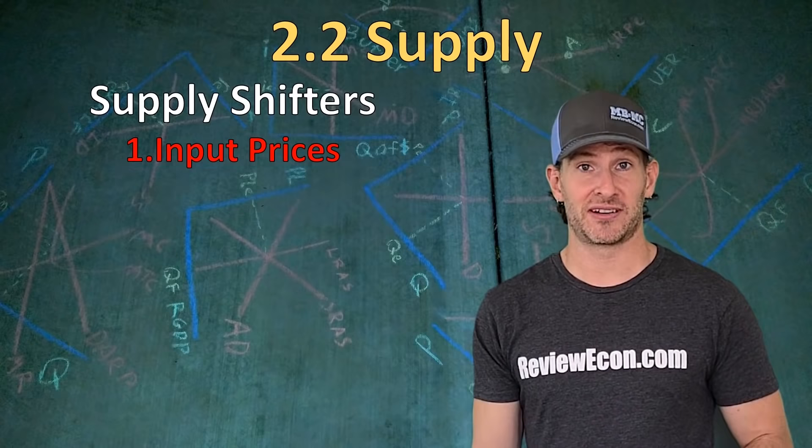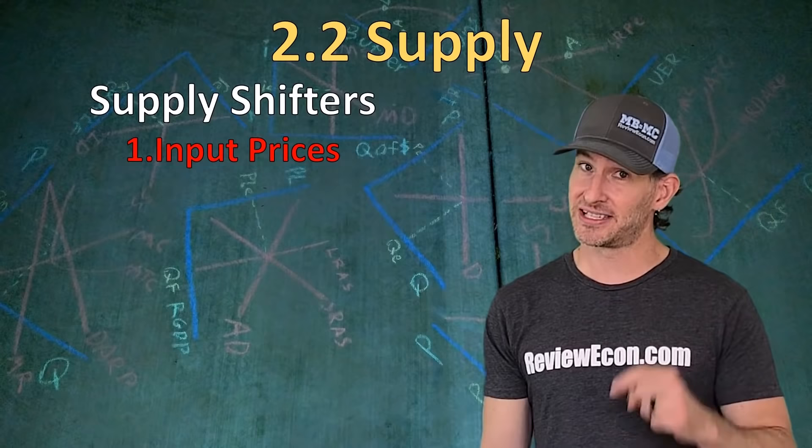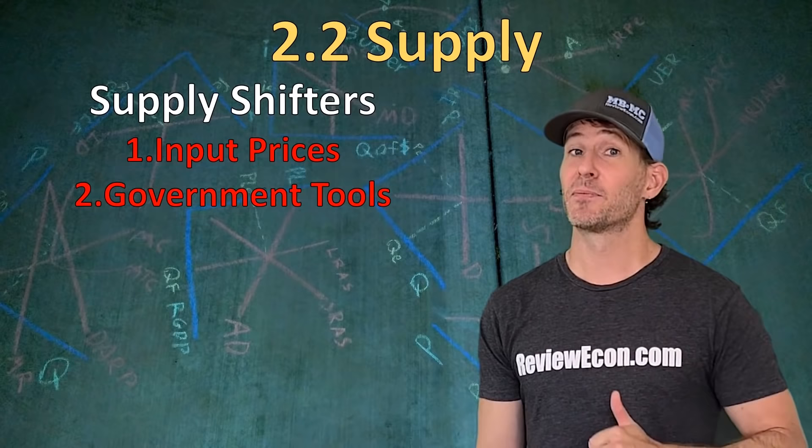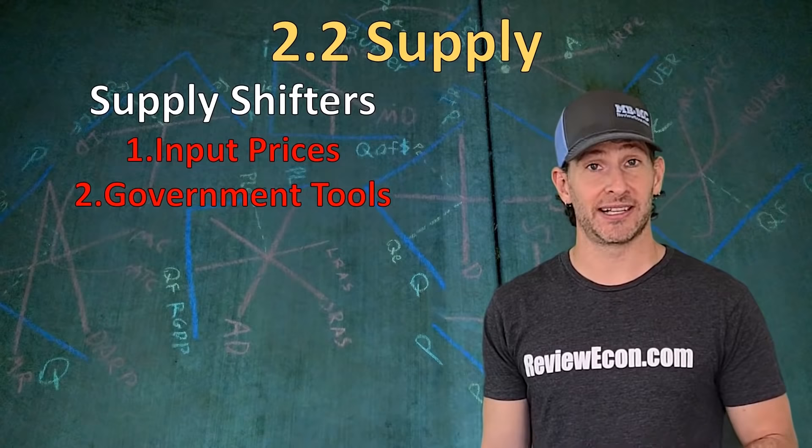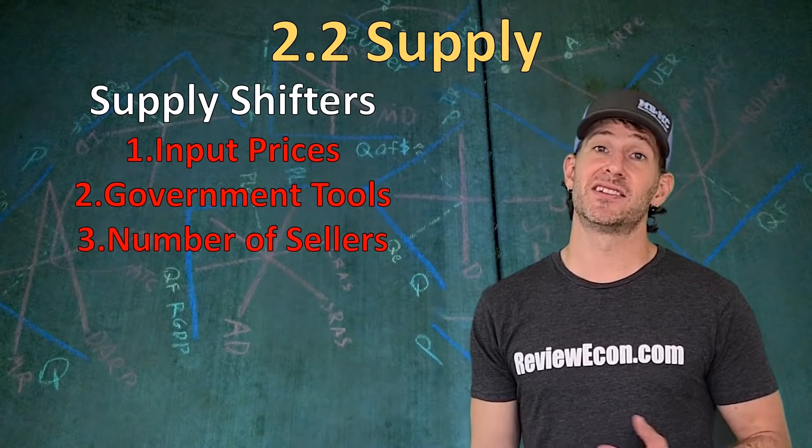First, we've got input prices — the things that go into production. If the price of a resource used in production goes up, it will decrease supply; if it goes down, it will increase supply. Then we've got government tools: per unit taxes decrease supply, subsidies increase supply, and regulations will generally decrease supply depending on the type.